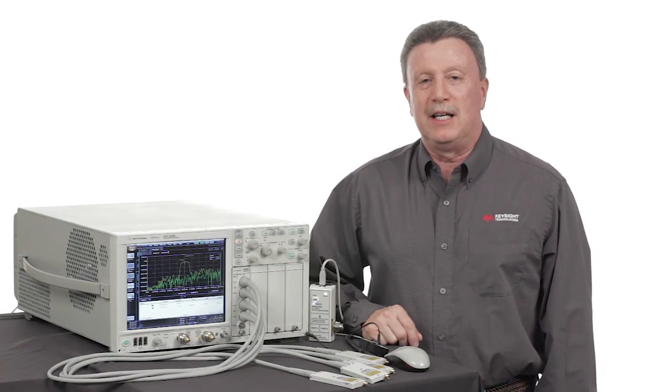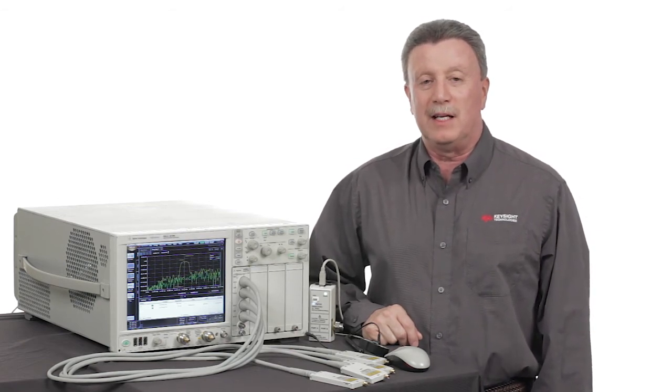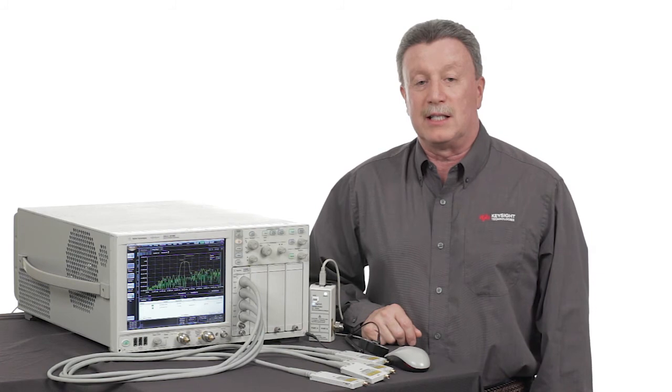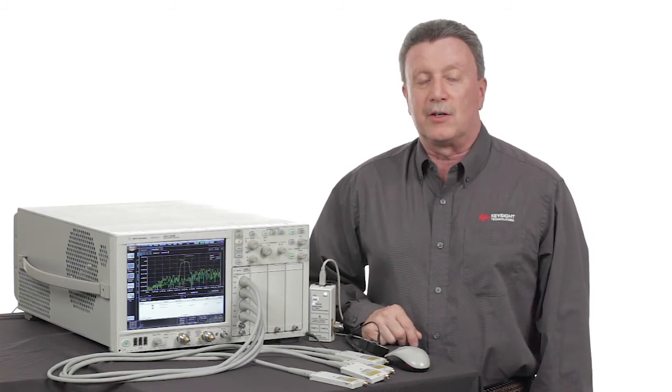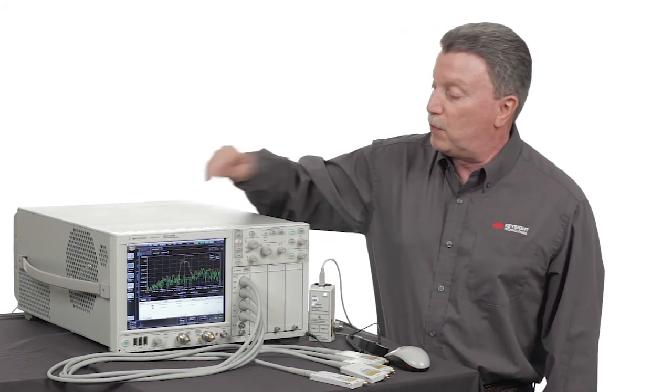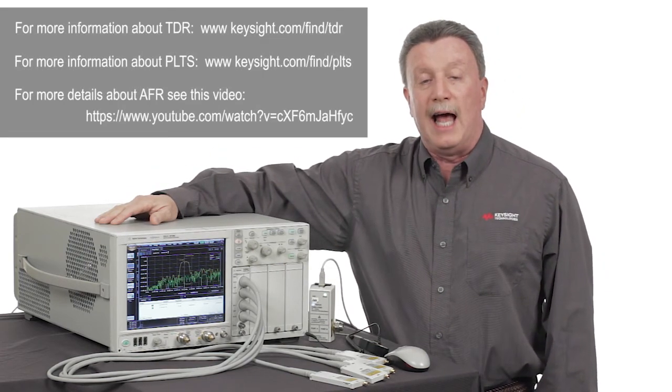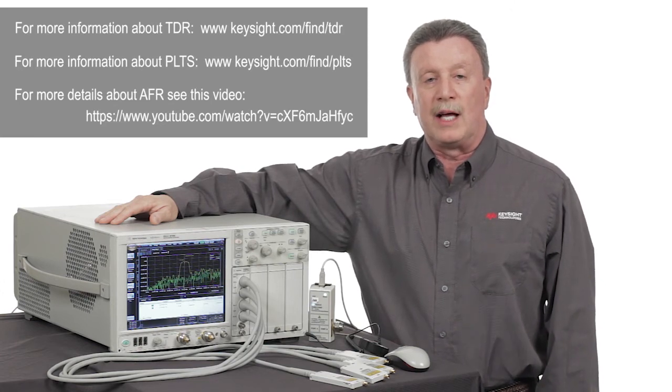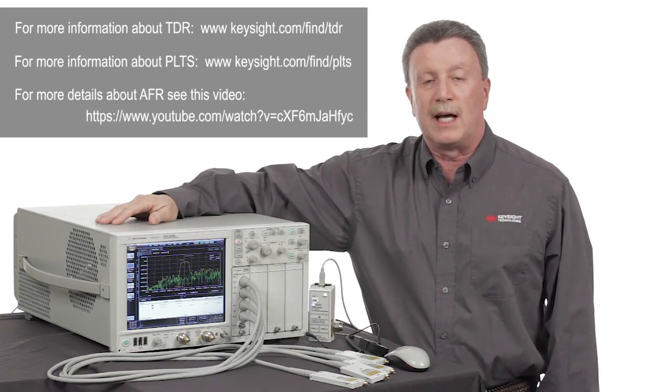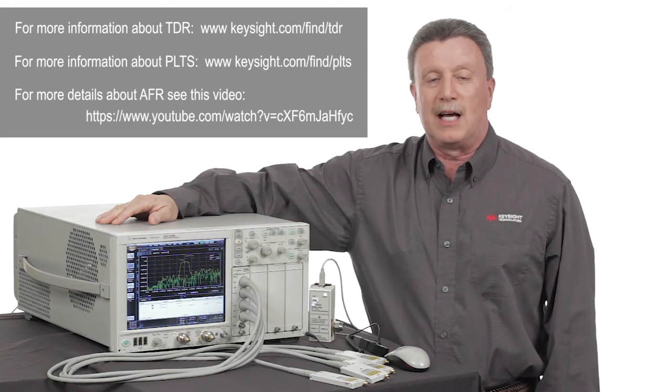Using fixtures and probes with the TDR is fast, easy, and accurate if you have a high performance instrument, a robust calibration process, and AFR so you can characterize probes or fixtures with non-standard instrument connectors. If you already have a DCA-X based TDR system like this one, you can add AFR with a user installable license. And if you don't have one but would like to learn more, please contact your local field engineer. Thanks for spending time with us today.